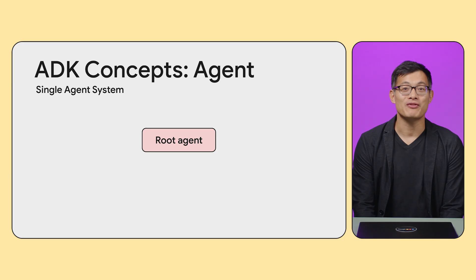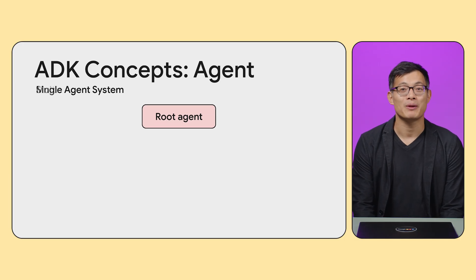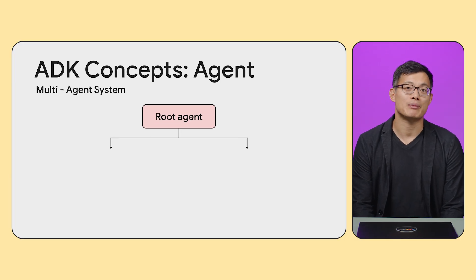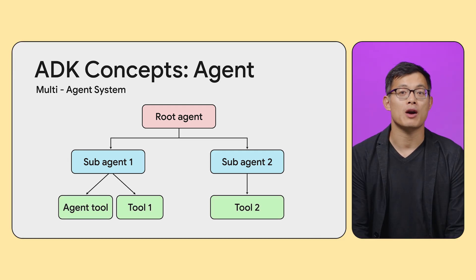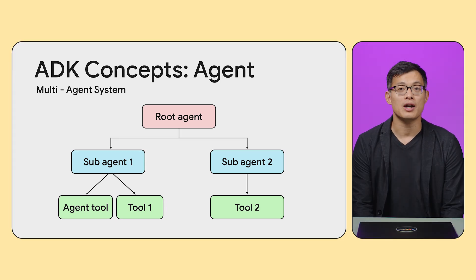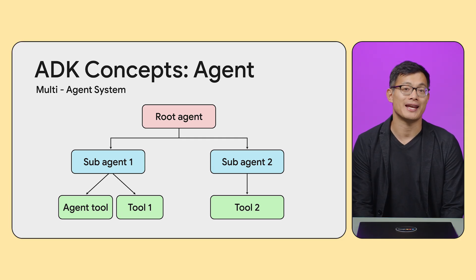Next, let's get into how we can implement more complex concepts. So far we've only used a single agent, but we can have multiple agents collaborating together in a multi-agent scenario. Go ADK supports interoperability for tools via MCP and for agents via the agent-to-agent protocol. We'll talk more about these in future videos. For today, let's explore how to build multi-agent architectures using ADK's native functionality.